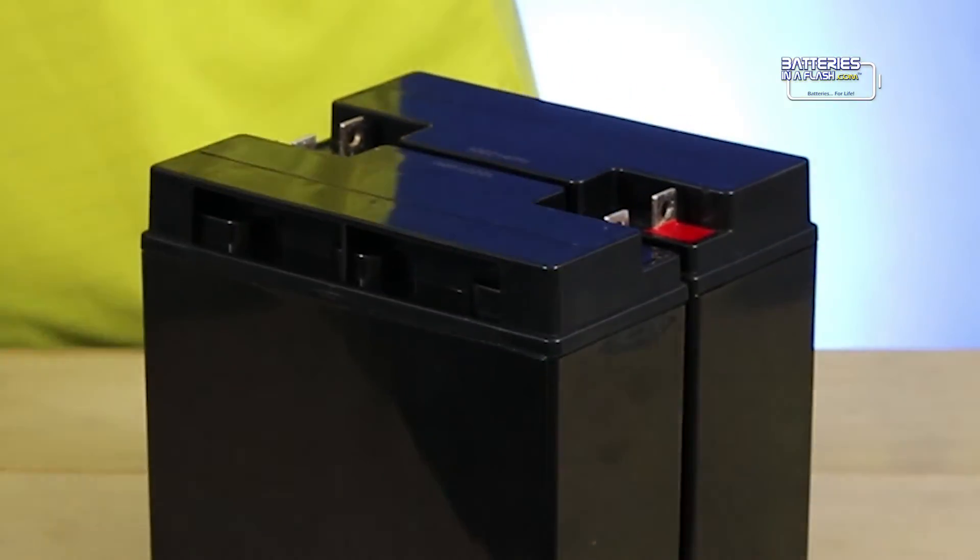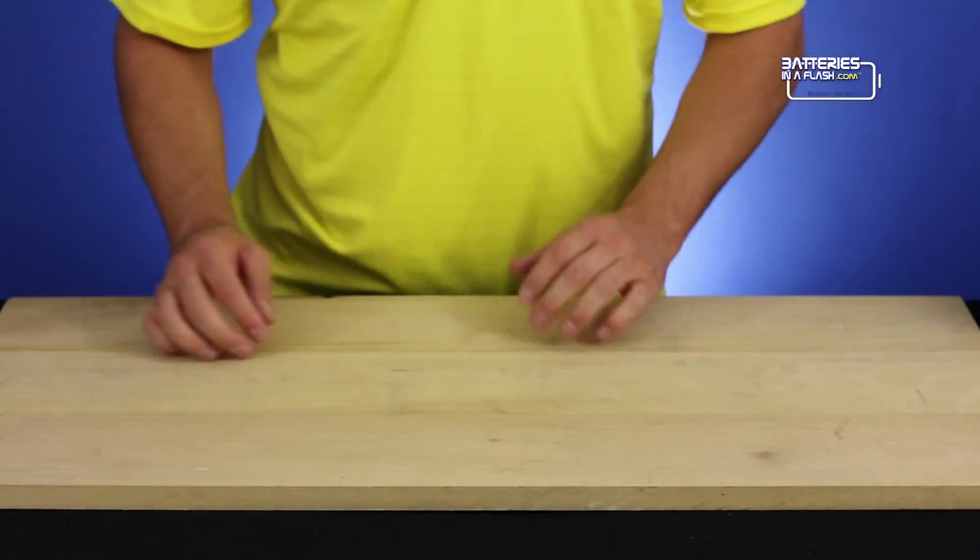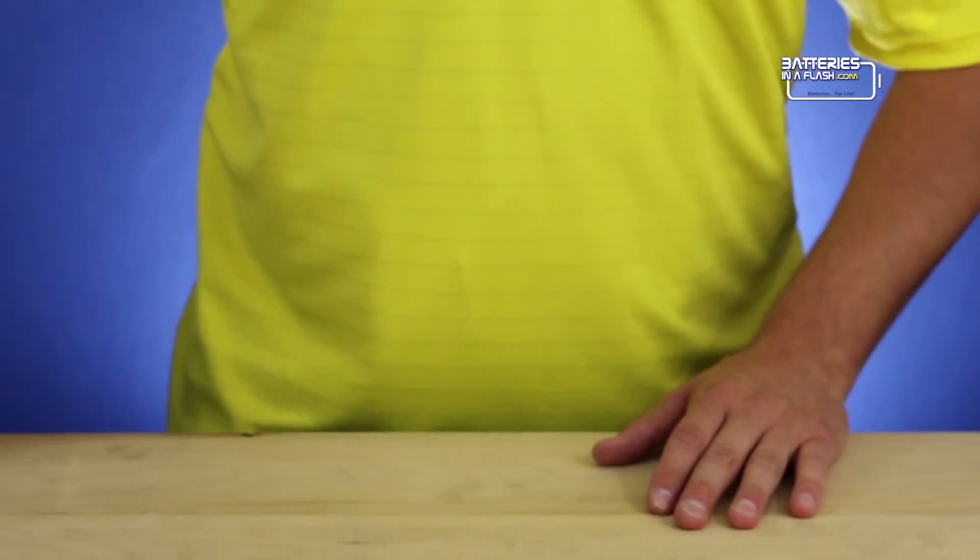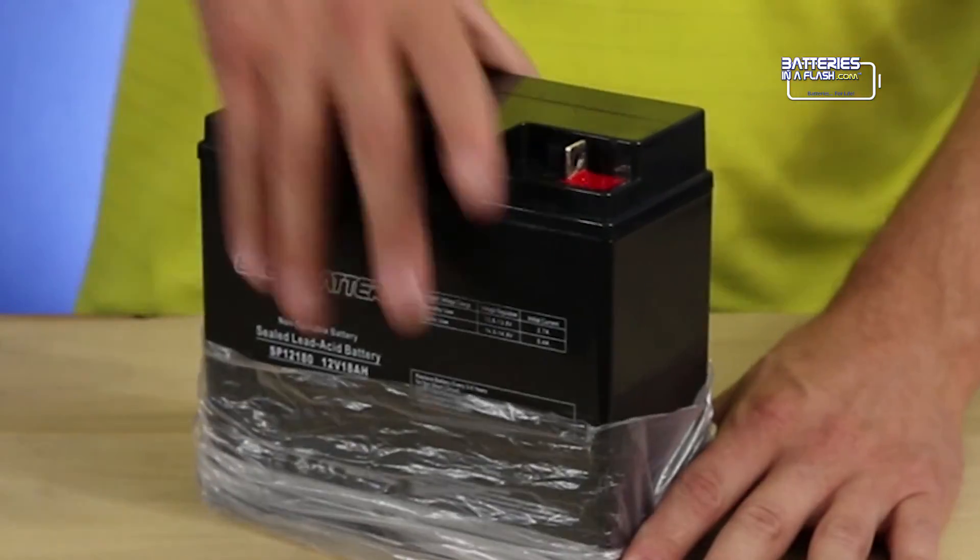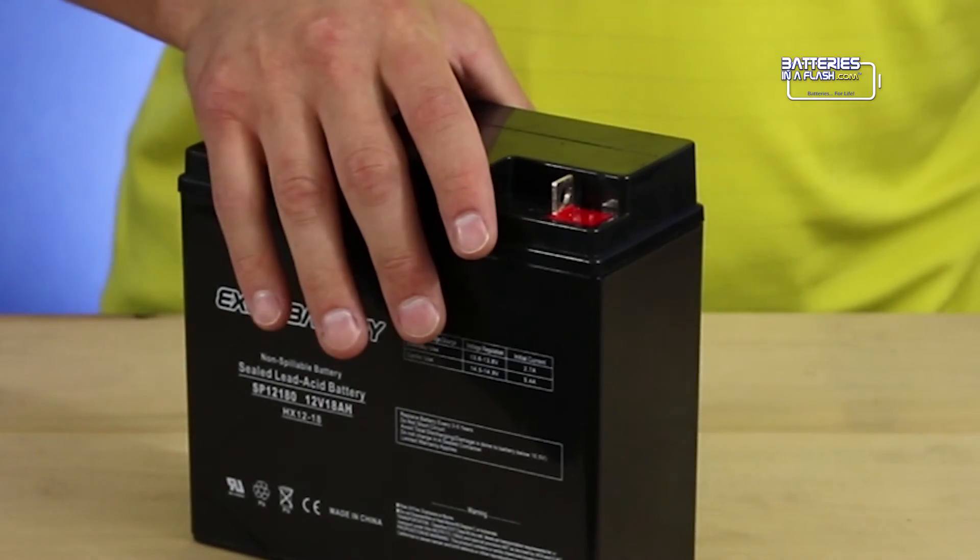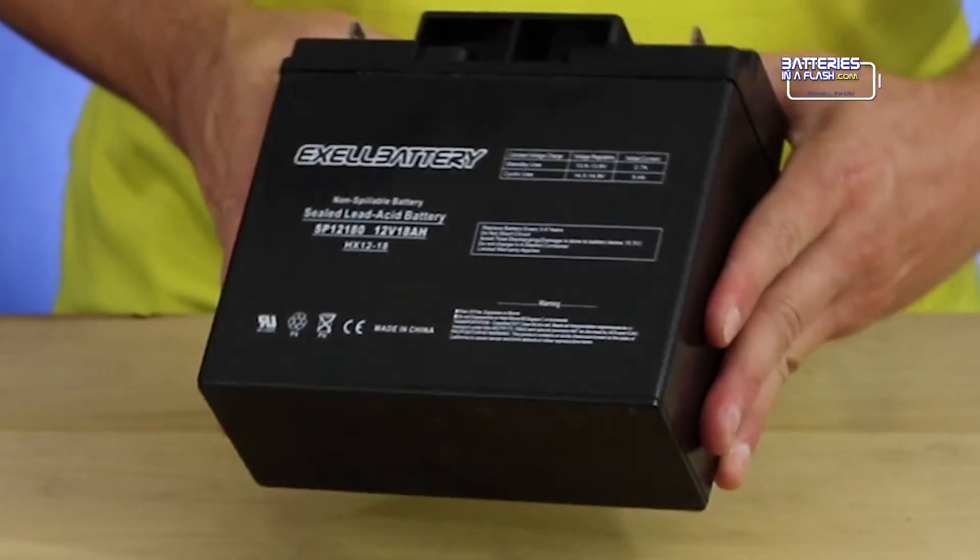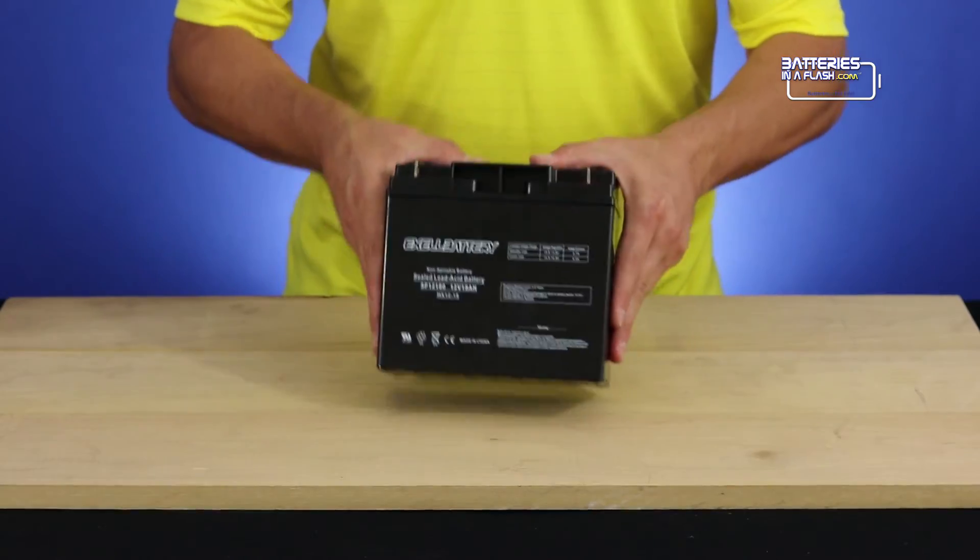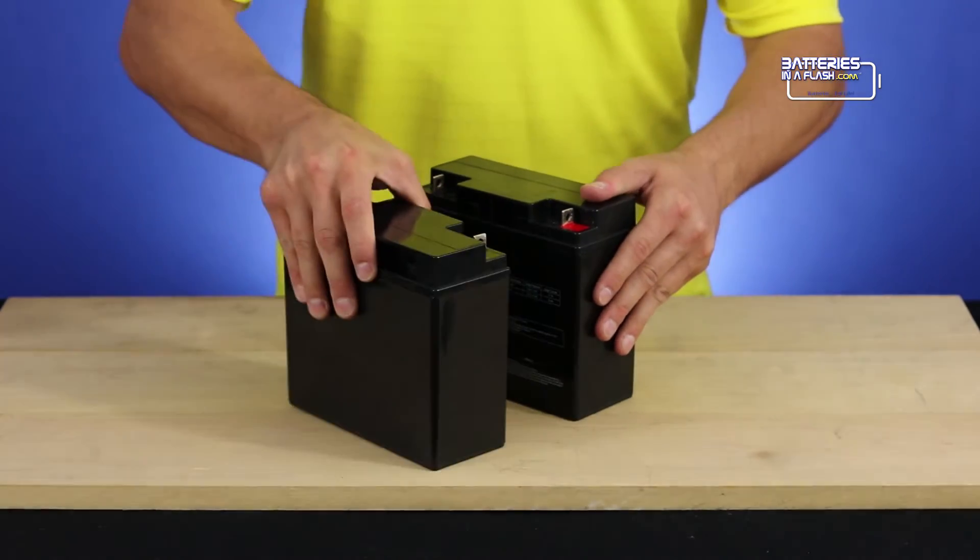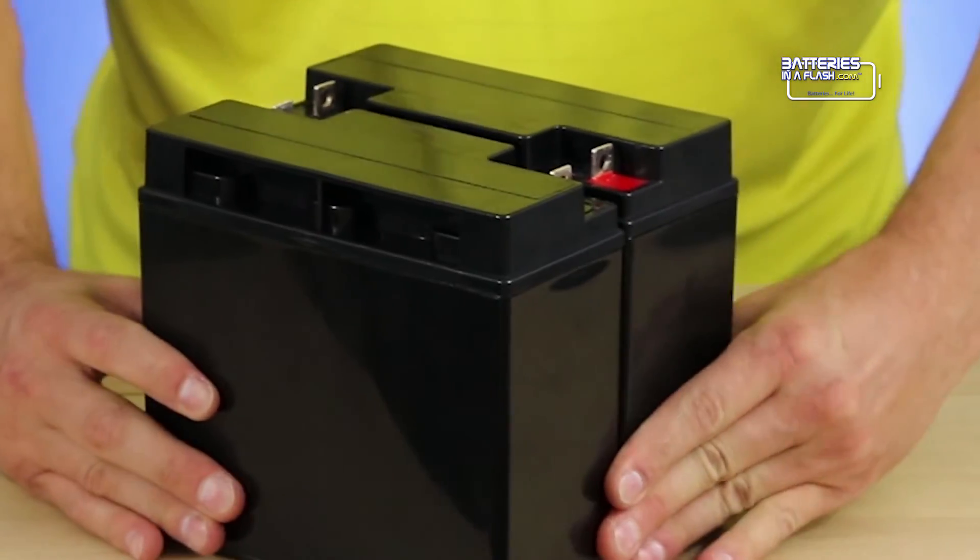Now that we have all the hardware from the old battery, set them to the side and let's get our new battery started. Today I will be using Accel battery 12-volt 18-amp battery as my replacement. They can be found on the BatteriesInAFlash.com website. Put both batteries on your workbench and push both batteries together so that their labels are touching each other.